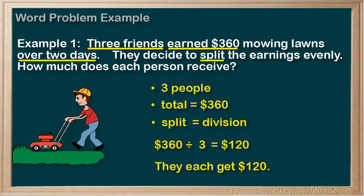Step four: confirm. A quick reread of the question — three friends earned $360 mowing lawns over two days, they decide to split the earnings evenly, how much does each person receive? We did answer how much each person received: $120. Does that make sense? If each person gets $120 and there are three of them, then $120 times three is $360. Yeah, that makes sense.